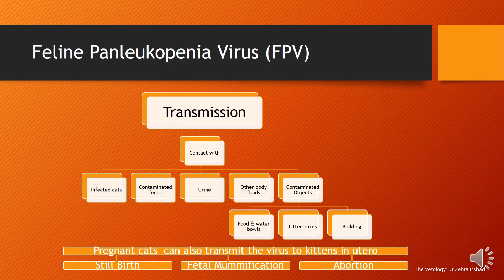Transmission of feline panleukopenia occurs when a cat comes into contact with an infected cat, its contaminated feces, urine, or other body fluids, or contaminated objects such as food and water bowls, litter boxes, and bedding. The primary route of transmission is oronasal. In some cases, pregnant cats can transfer the virus to kittens in utero.